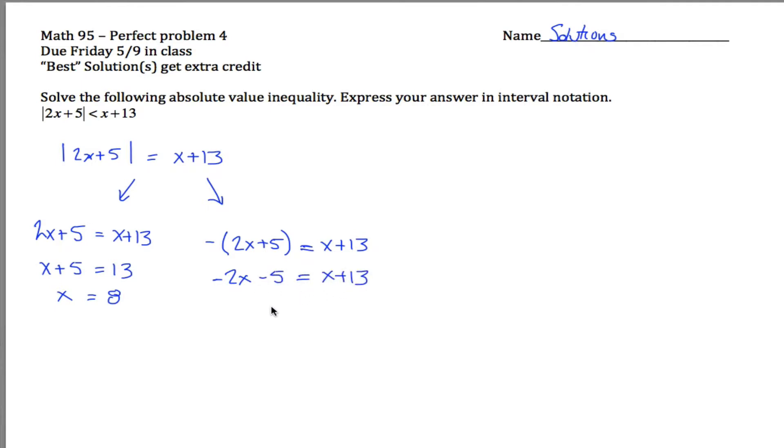Then get all the x's together on one side of the equation. I like to keep the coefficient on the x positive, just personal preference, so I'm going to add 2x to both sides to give me 3x plus 13. You also could have subtracted x from both sides, but I think it's easier to add 2x to both sides.